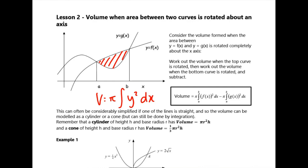Quite often in these questions you'll get cylinders or cones. If you rotate a horizontal line around the x-axis, you get a cylinder. If you rotate a straight line through the origin around the x-axis, you get a cone. When you get shapes like that, you can either do it by integration or use the cylinder and cone formulae. For a cylinder use πr²h; for a cone use ⅓πr²h.